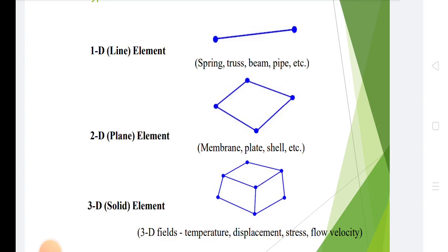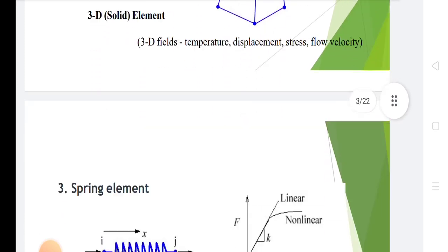To repeat the types: 1D elements include spring, truss, beam. 2D elements include membrane, plate, shell. 3D elements cover temperature, displacement, stress, and flow velocity.